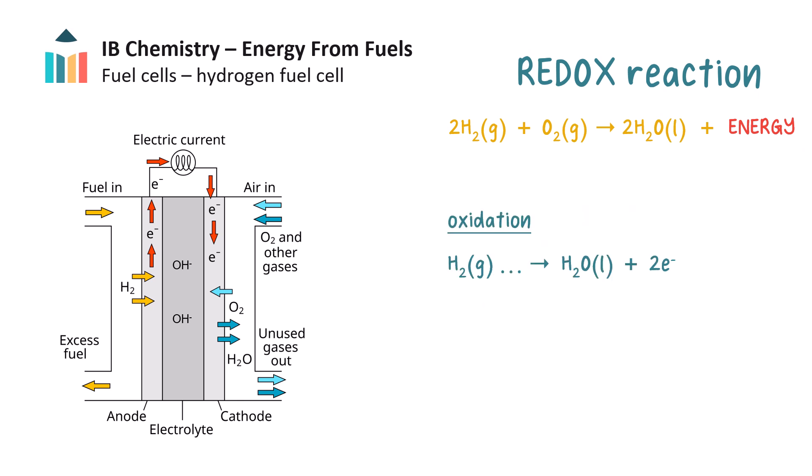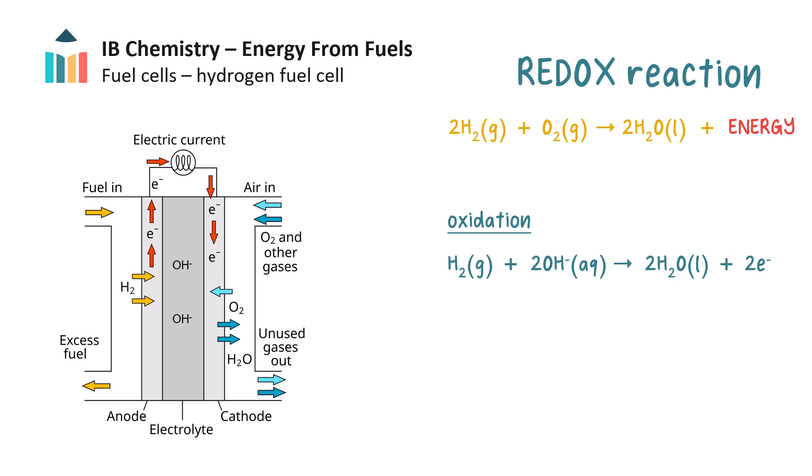As hydrogen enters the anode, each hydrogen loses one electron as it forms water. This equation needs oxygen on the left. The electrolyte solution is sodium hydroxide, and this supplies oxygen in the form of hydroxide ions to the hydrogen gas, and we can balance this equation. At the same time, oxygen gas enters the cathode, and each oxygen atom gains two electrons as it forms water. This equation needs negative charges on the right to balance the negative charges on the left, and these negative charges come from the hydroxide ions in the electrolyte, so we write 4OH⁻ on the right.